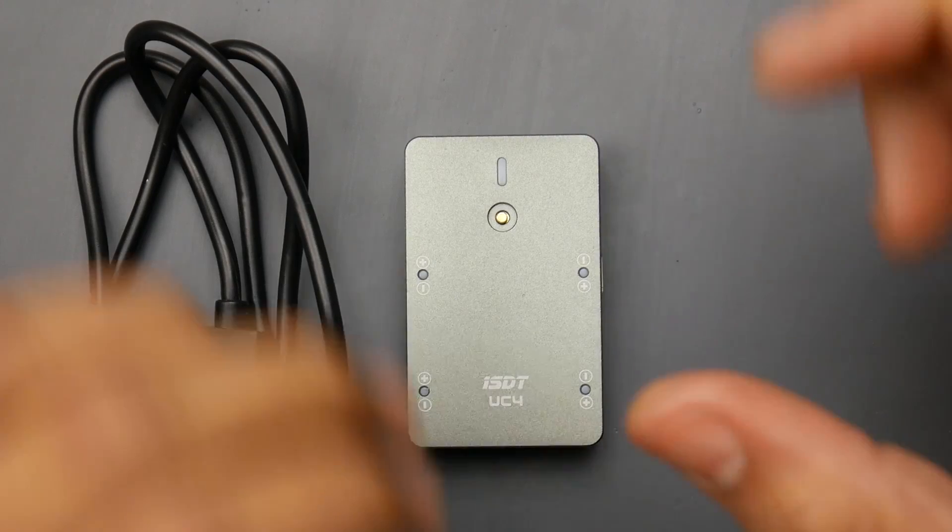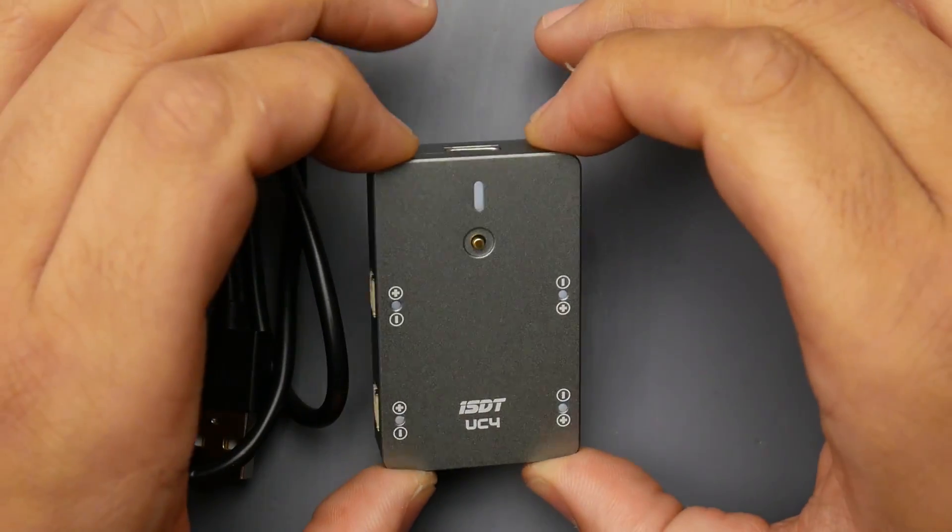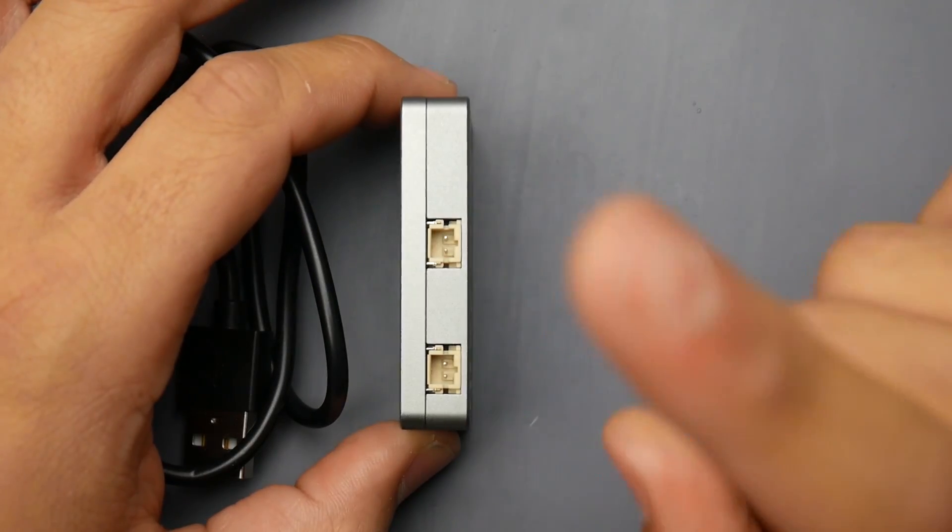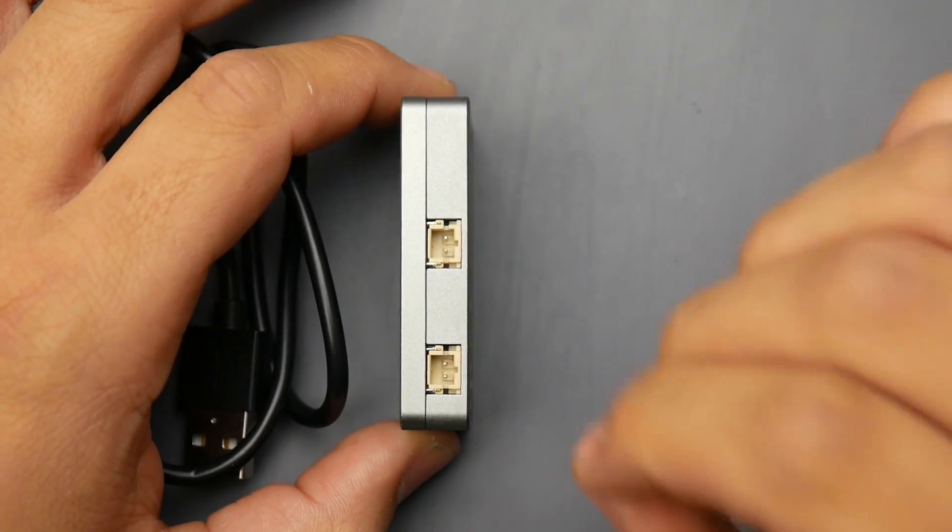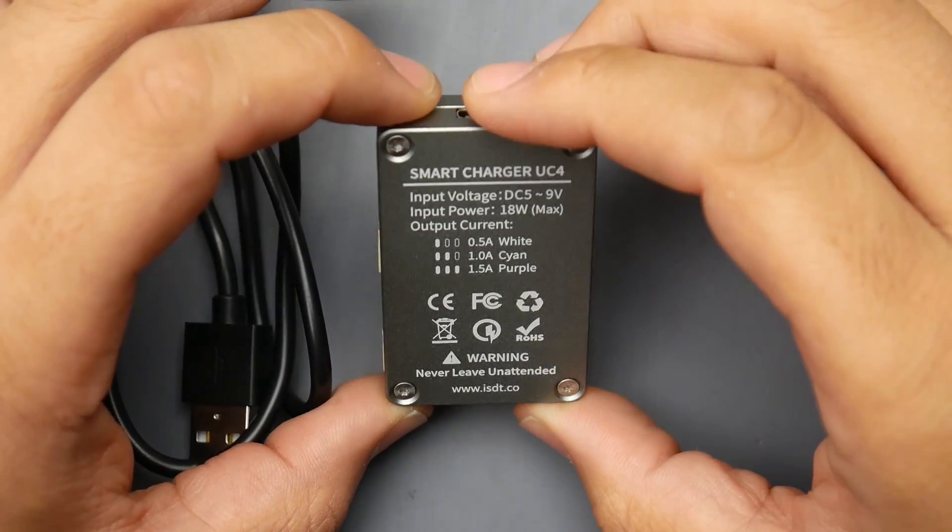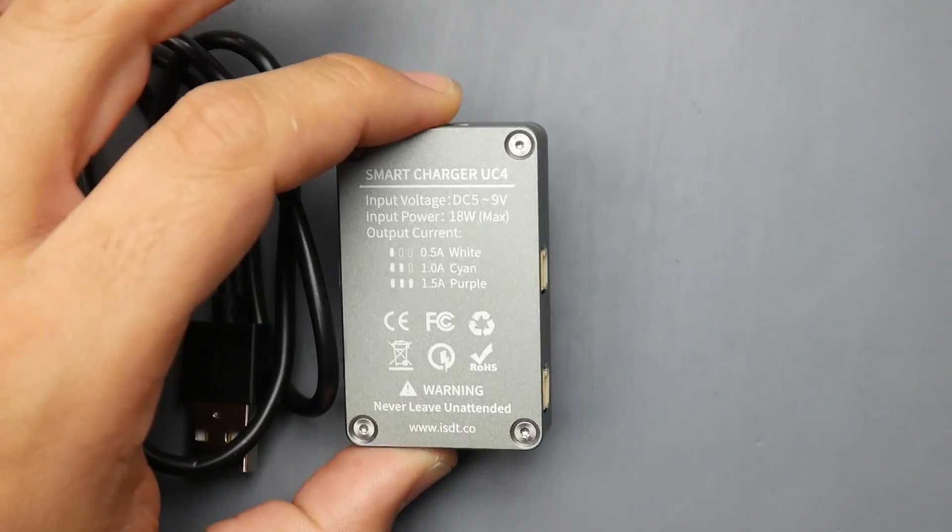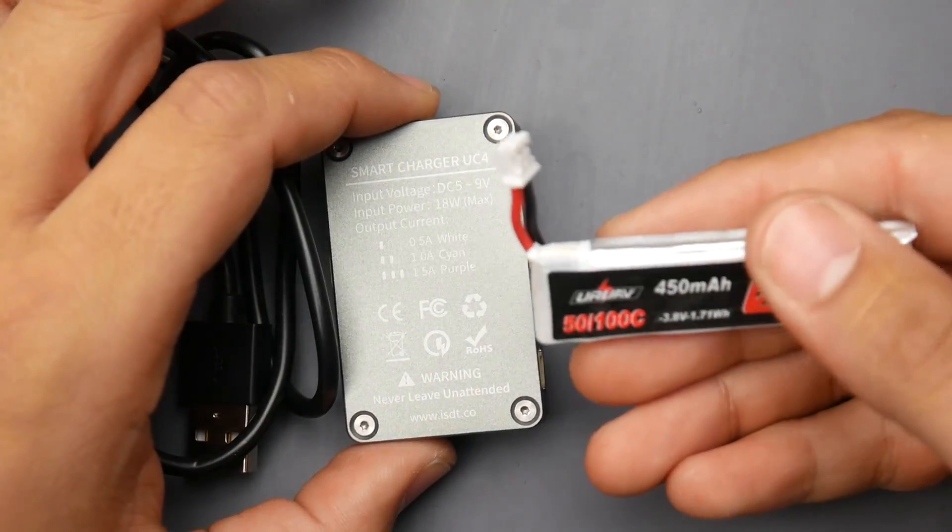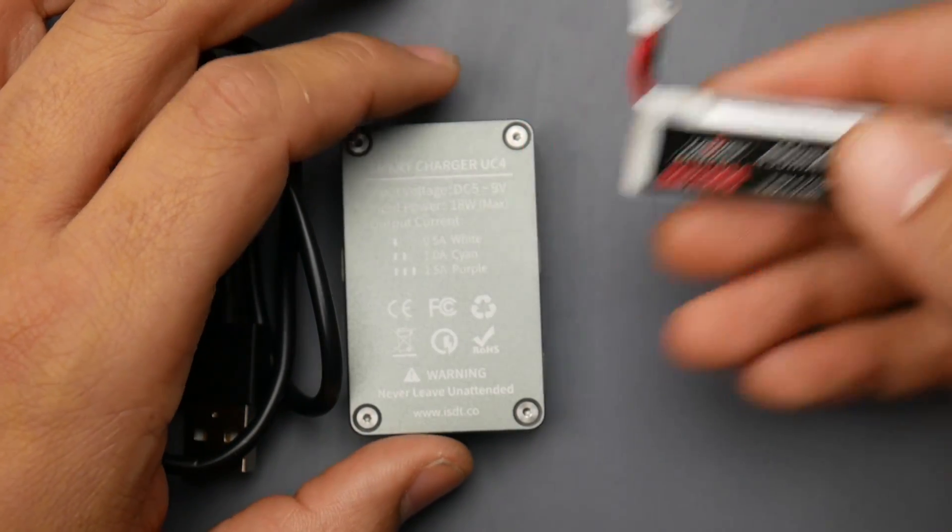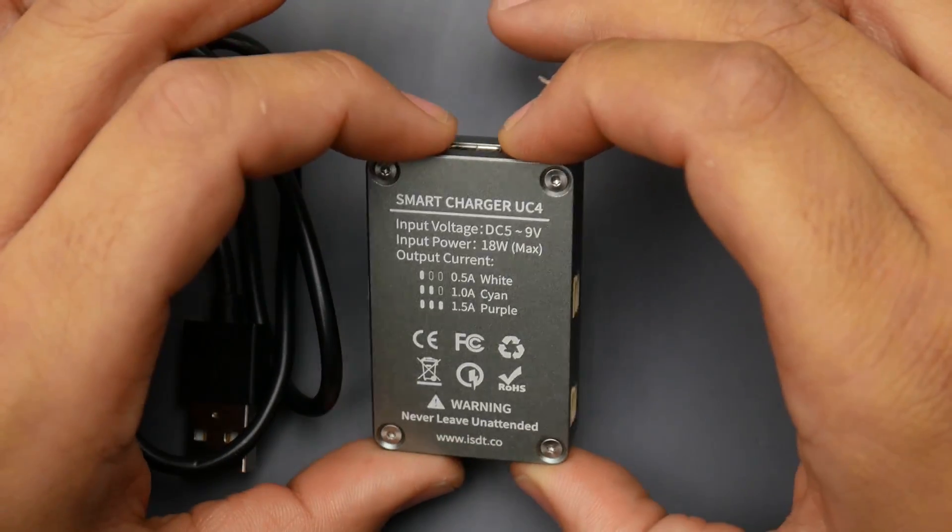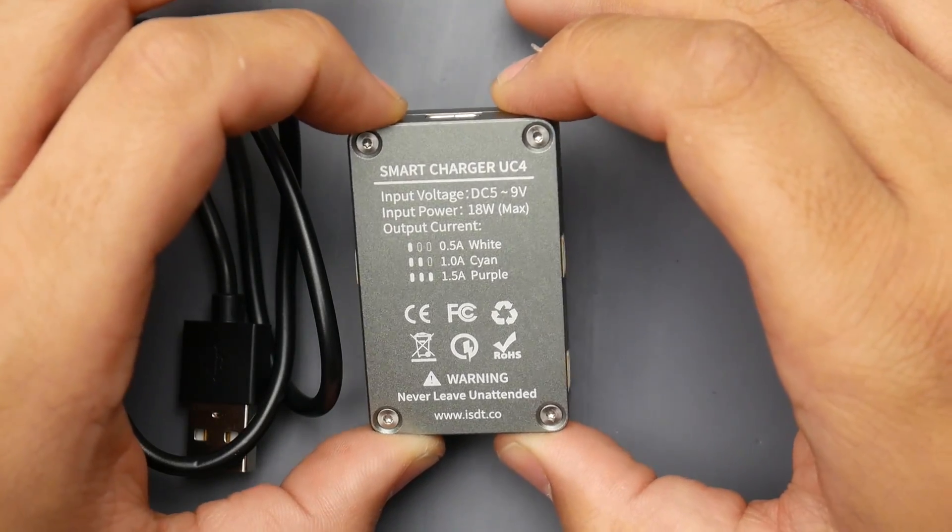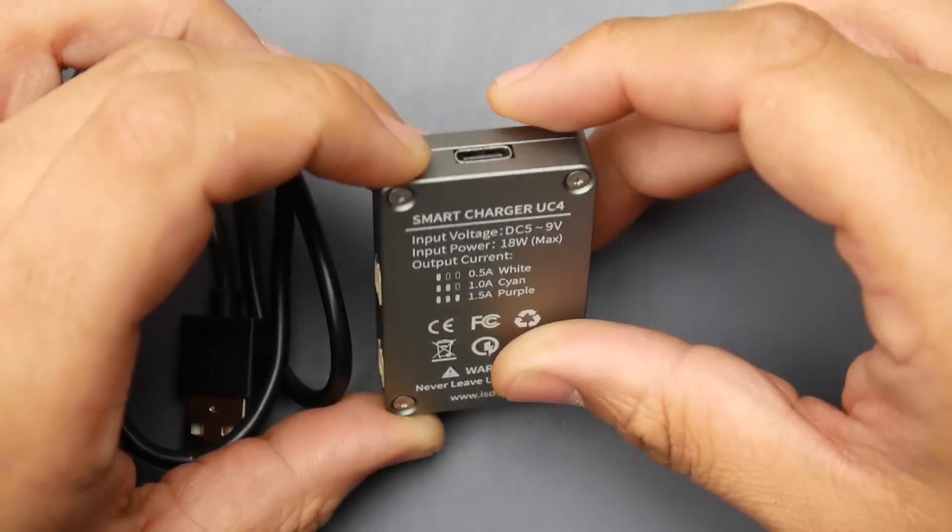Hey, what is up guys and welcome back. So today we have a new charger from ISDT, it's called the UC4. Now this thing charges four 1S LiPos, not HV LiPos, just LiPos, which is a shame to be honest. I really wish it charged HV LiPos because all I have are HV LiPos and that is the only thing being actually used for micros nowadays. So I don't know why they've gone ahead with just basic 4.2 volt 1S LiPos.